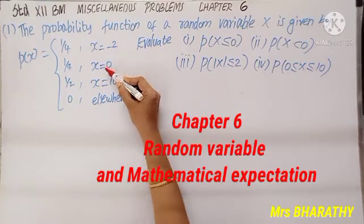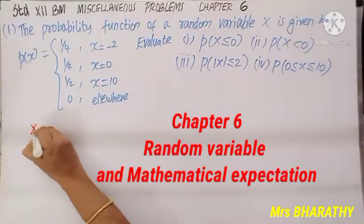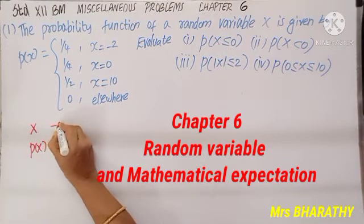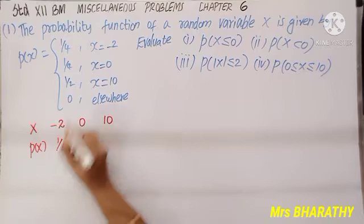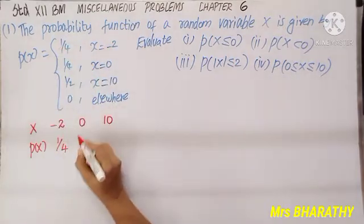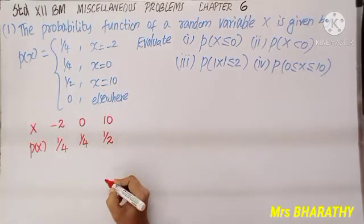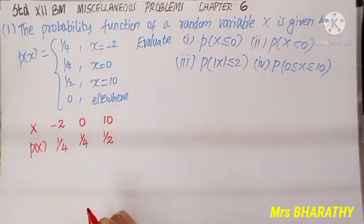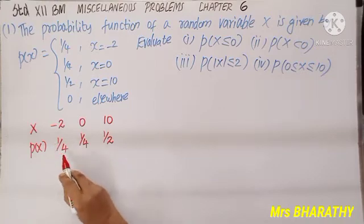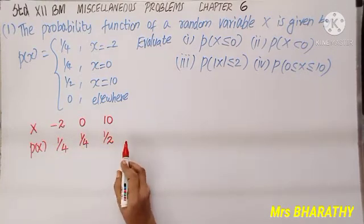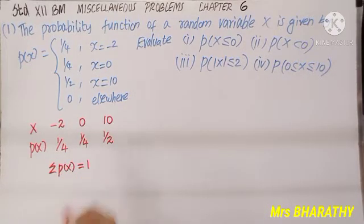As we see the question, x is given in each case, so it is a discrete random variable. We can tabulate: x values are -2, 0, 10; P(x) values are 1/4, 1/4, and 1/2 respectively; in the remaining places it is 0. Check whether the total probability is 1: 1/4 + 1/4 + 1/2 gives us 1.